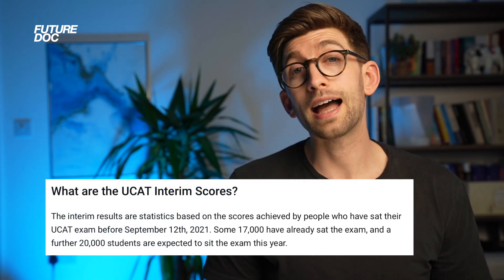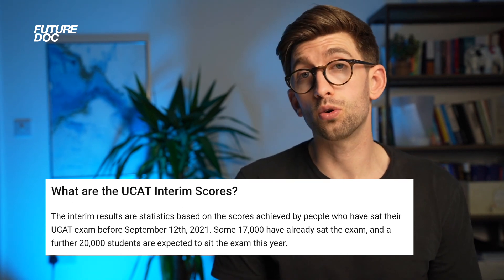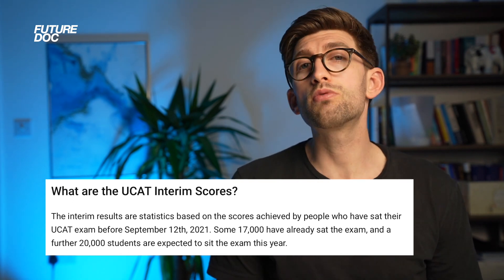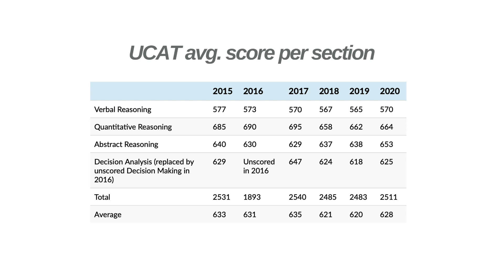Typically, in any given section, a score of over 650 would be considered good, and a high score would be 680. When you take it section by section, verbal reasoning is usually the worst performing — typically an average of about 570. Quantitative reasoning is usually the one people do best in, with an average score of around 665. Abstract reasoning averages around 630 to 650, and decision making is massively variable year by year.